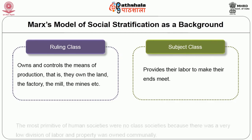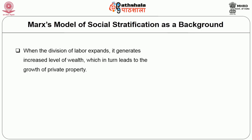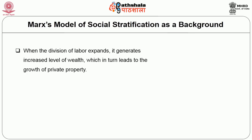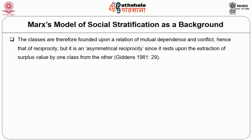The most primitive human societies were classless because there was very low division of labour and property was owned communally. When the division of labour expands, it generates increased wealth, which leads to private property. According to Marx, this involves the creation of surplus product appropriated by a minority of non-producers, who stand in an exploitative relation vis-à-vis the majority of producers. The classes are founded upon a relation of mutual dependence and conflict — an asymmetrical reciprocity resting upon the extraction of surplus value.